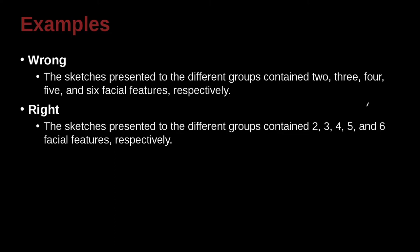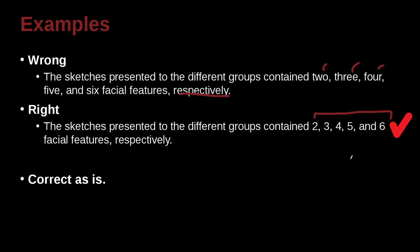The sketches presented to the different groups contained 2, 3, 4, 5, and 6 facial features respectively — meaning the first group had 2, the second had 3, the third had 4, and so on. This is really clear: these are numbers all related to each other, and therefore we write them as numbers and not spell them out because we're comparing them.